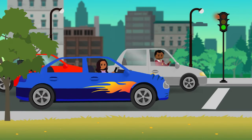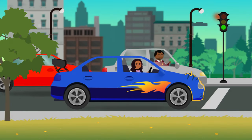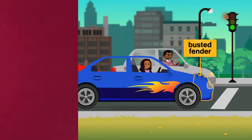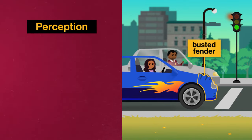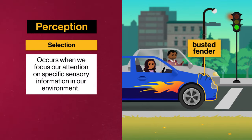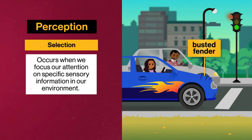Let's take a look at that perception cycle in action. Imagine you pull up to a red light and notice that the car next to you has a busted fender. That's the first part of perception, known as selection, which occurs when we focus our attention on specific sensory information in our environment. Because the busted fender is an unusual piece of sensory information, your brain selects it as something to focus on.